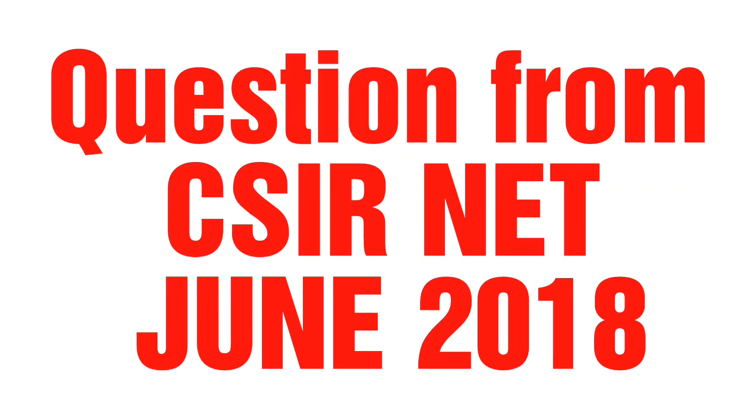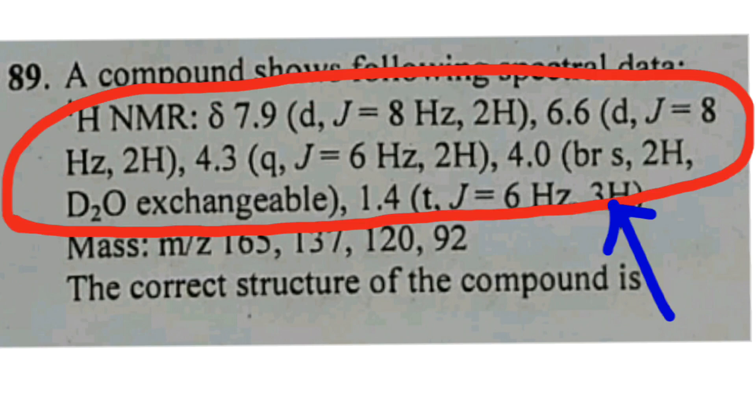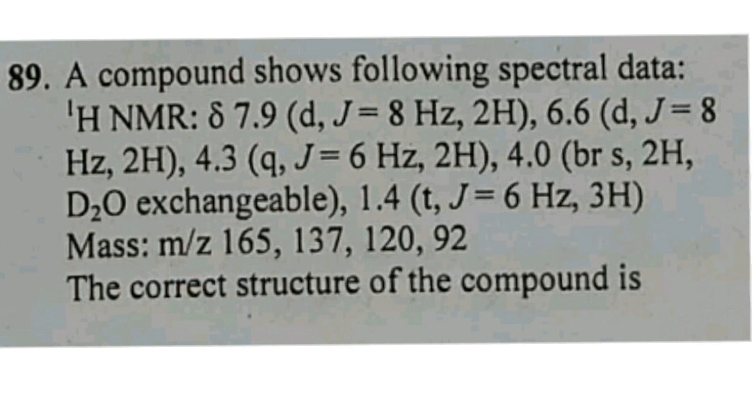Hello friends, in this video we will solve a question from CSIR NET June 2018 based on NMR spectroscopy. A compound shows the following spectral data and mass spectral data. The correct structure of the compound is,